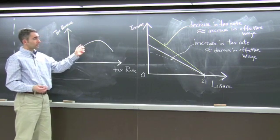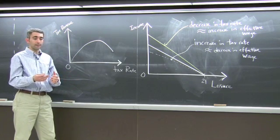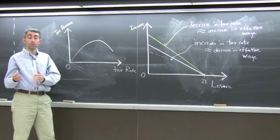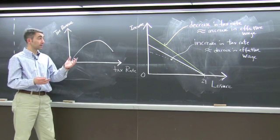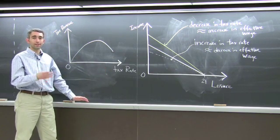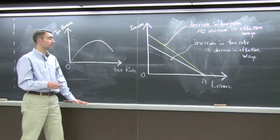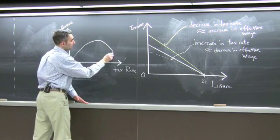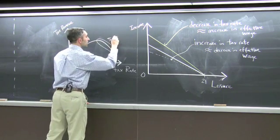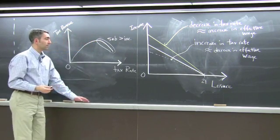So the effect, the size of the substitution effect, which is as leisure becomes effectively cheaper and cheaper, people will consume more of it and work less, because the steadily increasing tax rates decreases your take-home pay to such a point that leisure becomes very cheap, because working is the opportunity cost of leisure. All we can say with certainty is that in this downward sloping portion, the substitution effect is greater than the income effect.